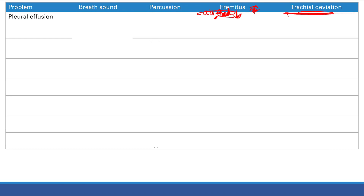Pleural effusion: there's fluid between the two layers of the pleura, so there's extra fluid between the lungs and your stethoscope — you'll have decreased breath sounds. Percussion: there's more fluid, so it's more dull. Fremitus: fluid decreases lung density, so you have decreased fremitus and decreased sound conductance.